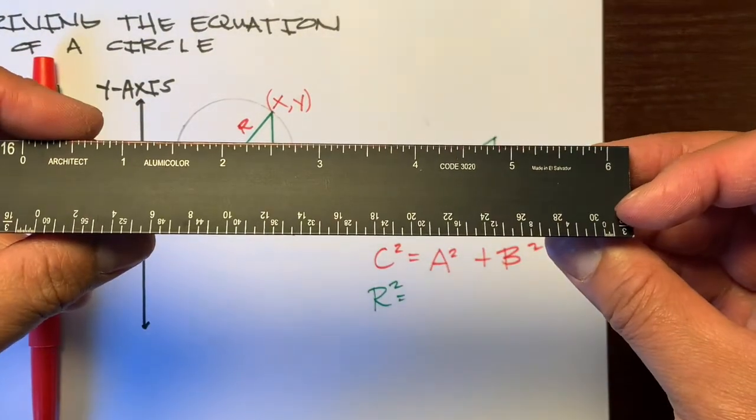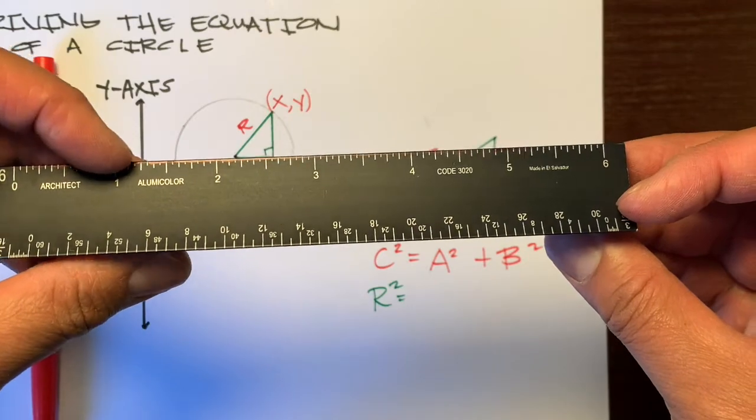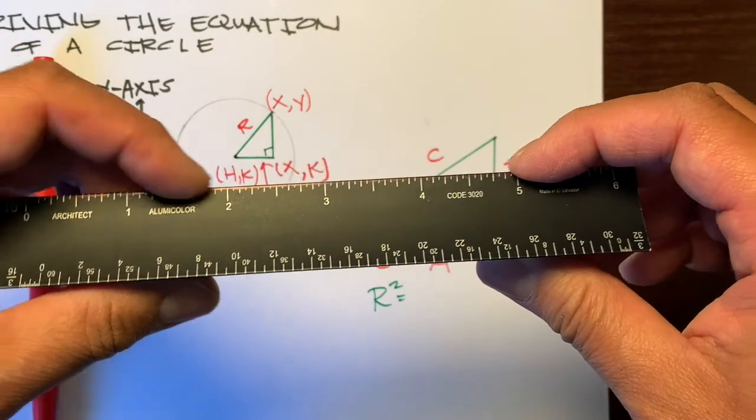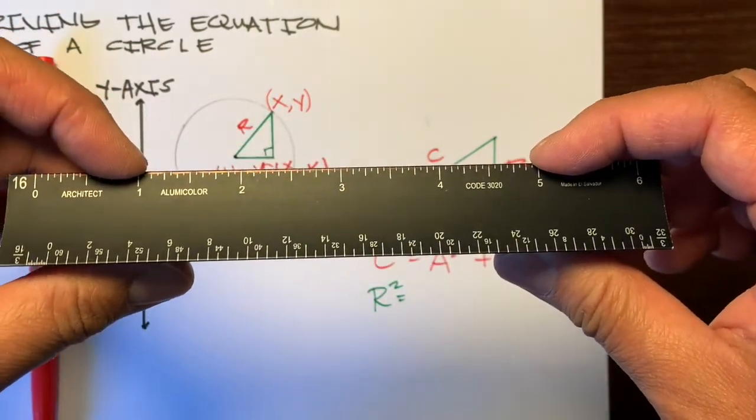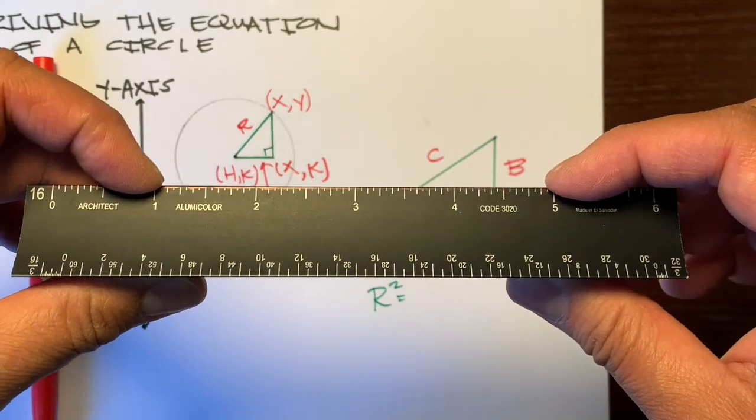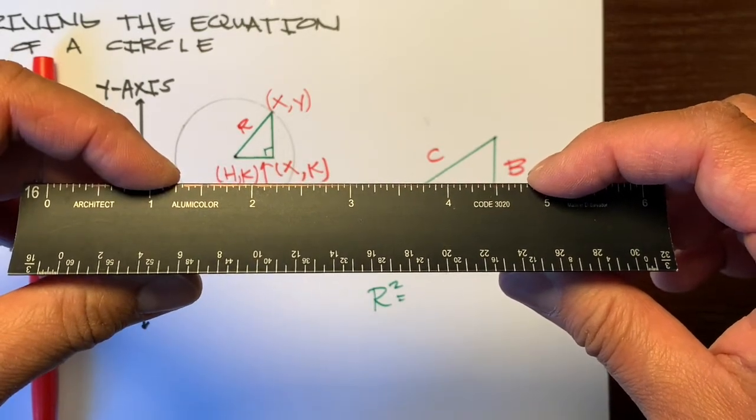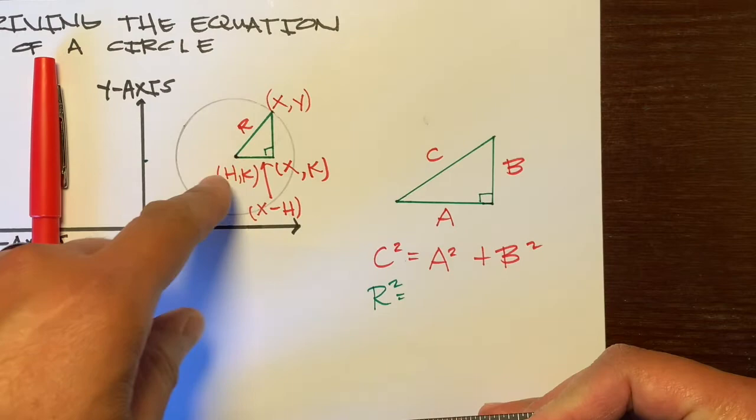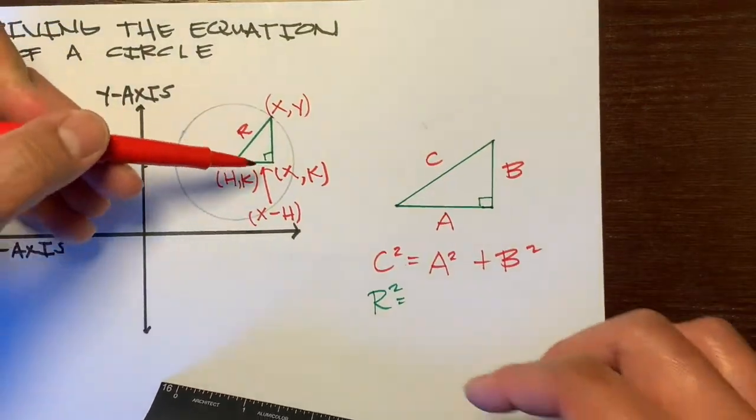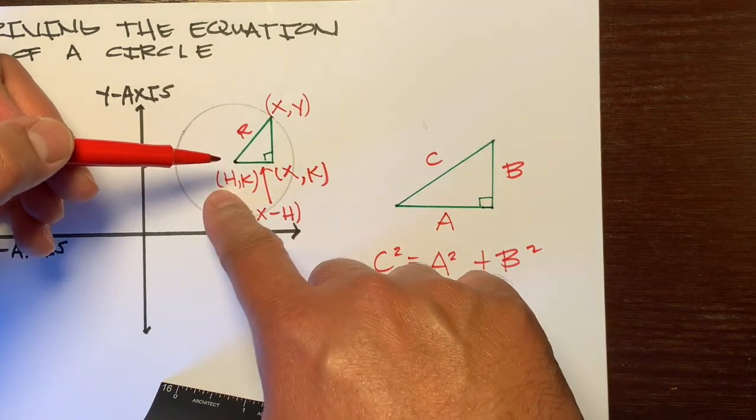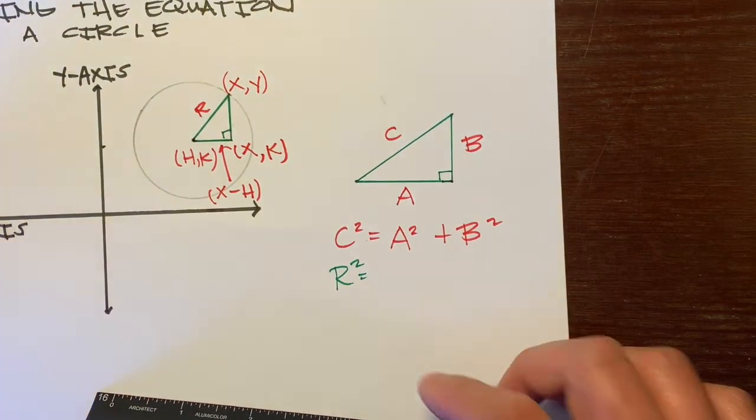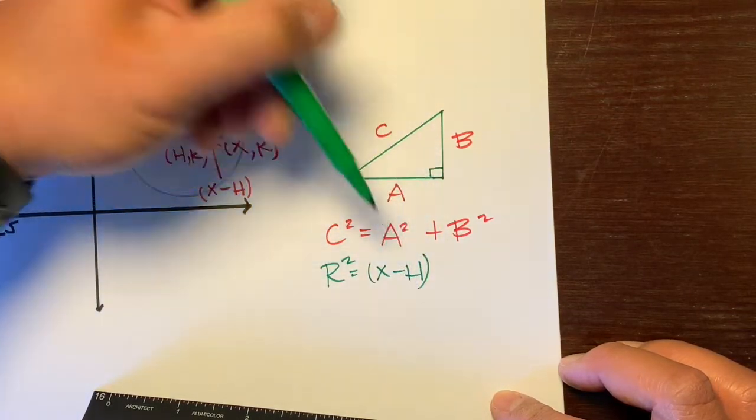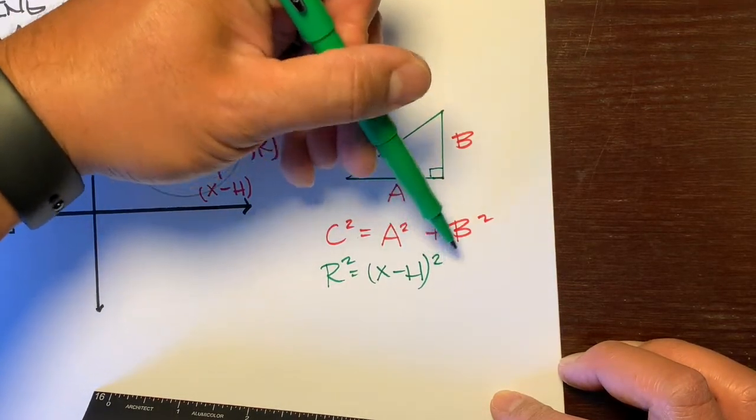We know that this is X minus H, this distance right here. For example, if we took a ruler and I said, what's the distance from one to five? You could count one, two, three, four, and the distance would be four inches. Or you could take this value, the five, and this value, the one, and subtract them. Five minus one is four. We can't really count with this one because we don't have numbers, so we're going to subtract X minus H. So this A value is X minus H, and because we're using the Pythagorean theorem, it is squared.